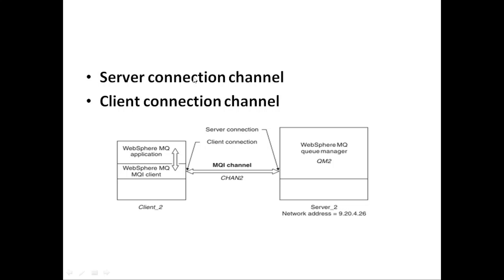The server connection channel, as the name suggests, is at the server end, and the client connection channel is at the client end. The client is basically a third party — someone outside your domain. If anyone outside that domain wants to connect, they are called a client. For example, if the domain is something like @xyz.com, any application outside that domain is known as a client.